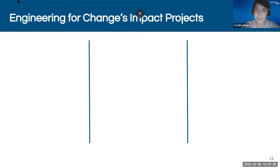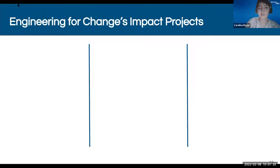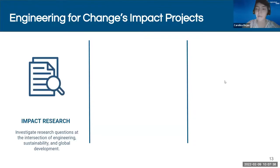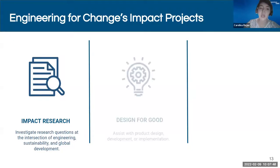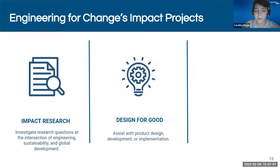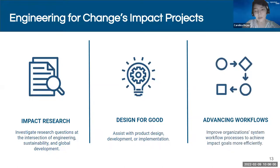We answer critical research questions through three main types of projects. The first is impact research, where we investigate research questions at the intersection of engineering, sustainability, and global development. The second type is design for good, where we assist with design, development, and implementation. And finally, our third type is advanced workflows, which aims to improve organizational system workflows and processes to achieve impact goals more efficiently.